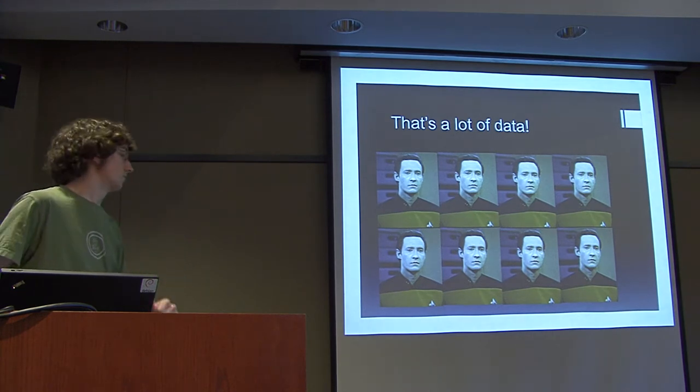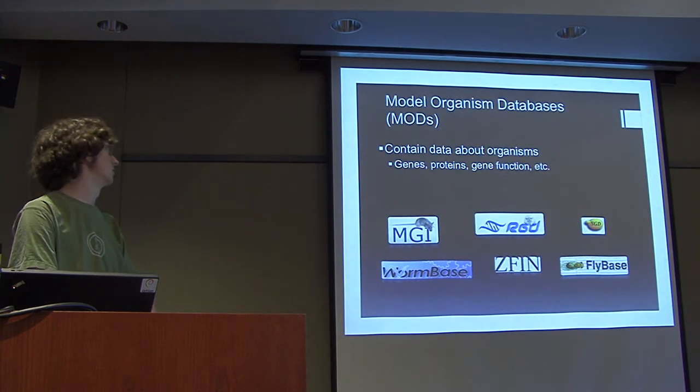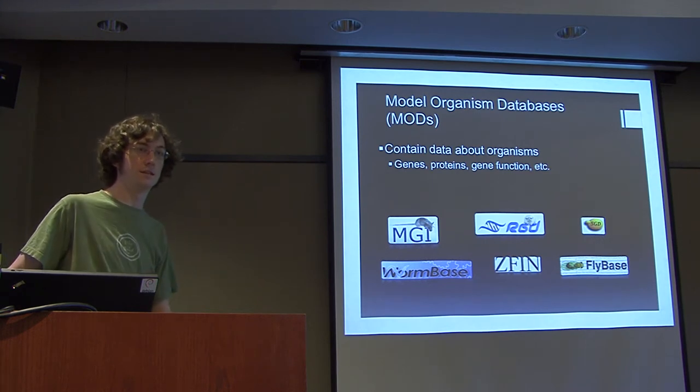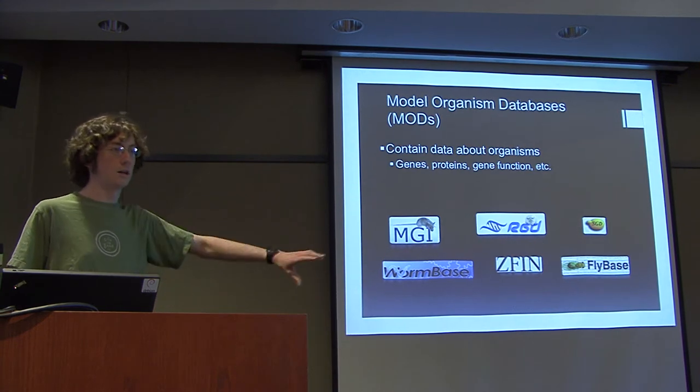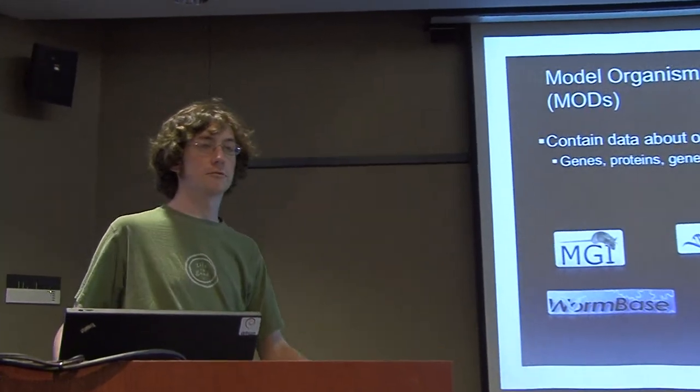Scientists are still trying to figure out what the solution to this problem is, but one of the solutions are these things called model organism databases. Their goal is to contain the massive amounts of information that are out there about all of the biological systems that are used by biologists, and then serve that freely to the biology community. They contain data about genes, proteins, everything that's in an animal, and they make it freely available on the internet to any biologist that wants to download that data.